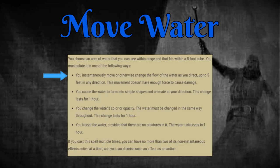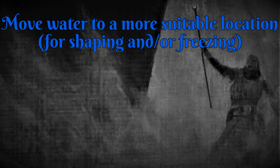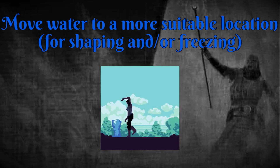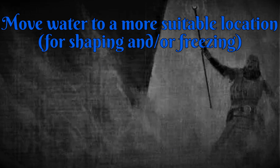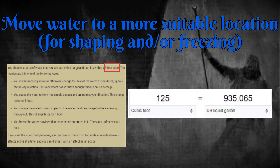This is the only instantaneous effect of the cantrip; all the others last for up to one hour. The most important use of moving water is to move water that you hope to shape and/or freeze to a more suitable location or container. Many of the other uses require this as a first step. Unless the water is already where you want it, you'll need to sloppily move a 935-gallon cube of water from a larger source.